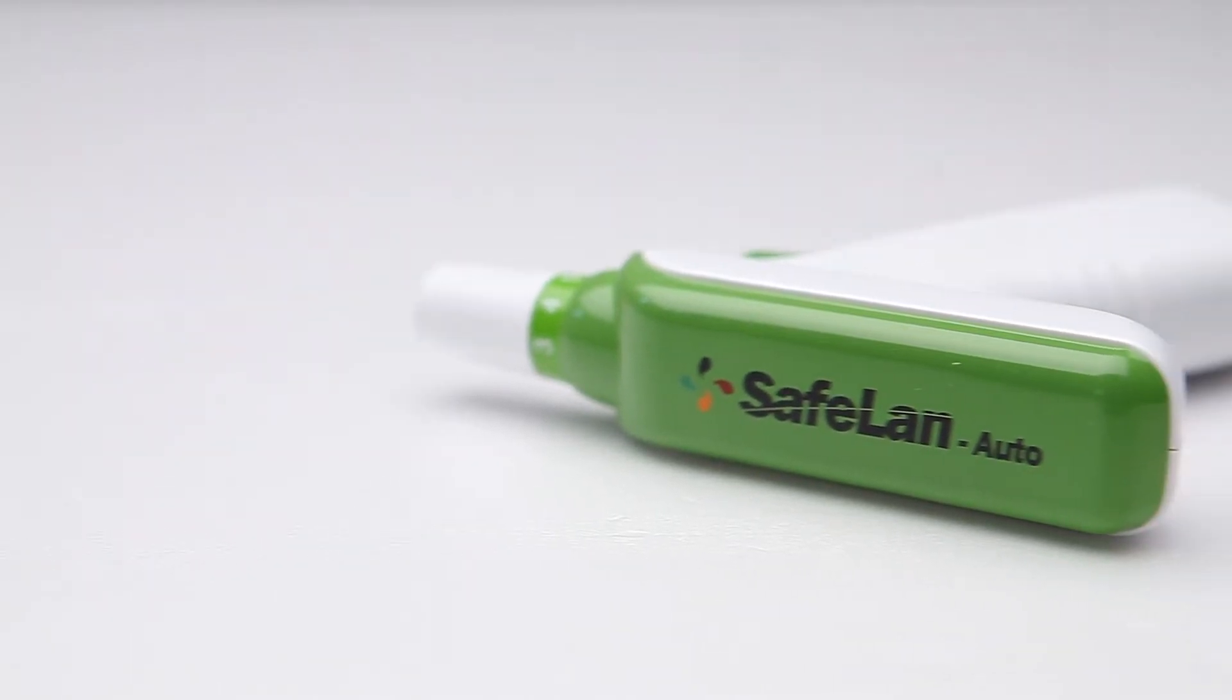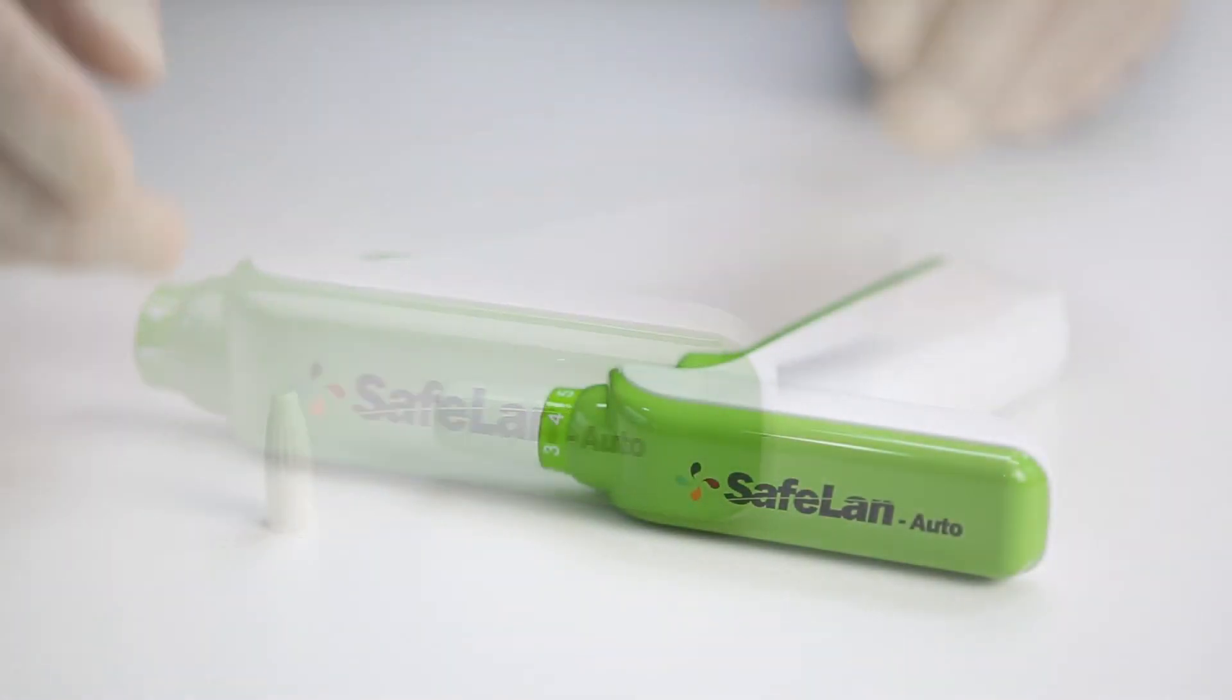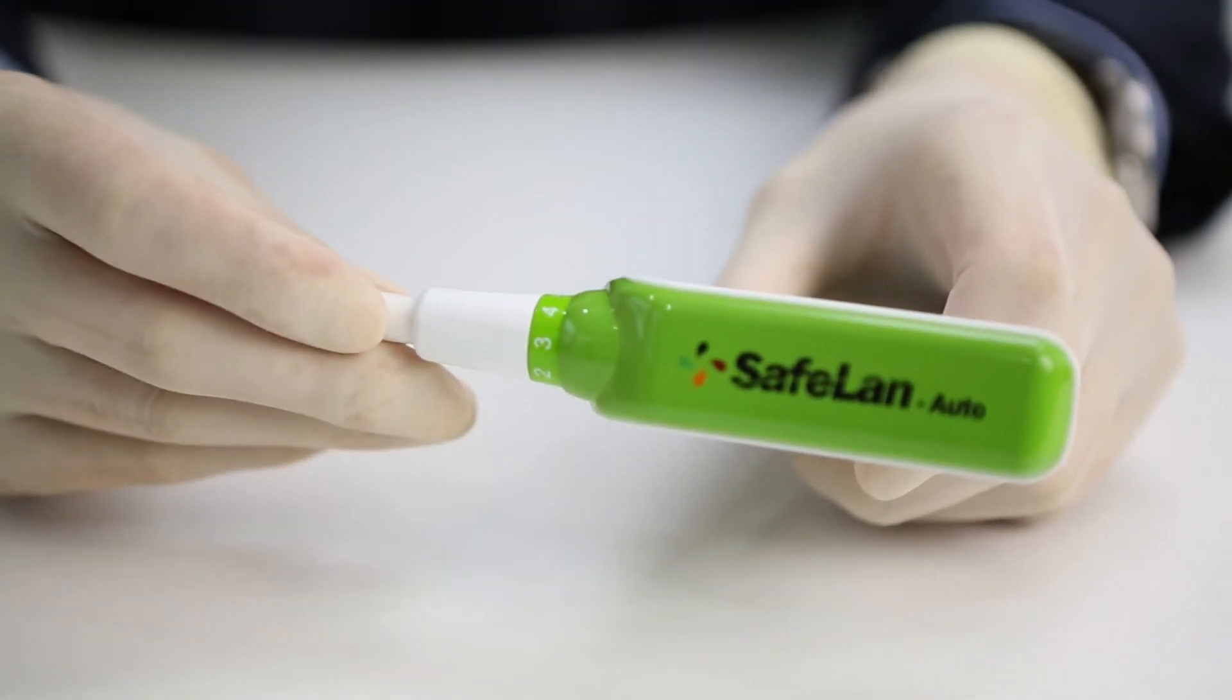Safeland Auto, which uses Safeland 26G, is a product used for bloodletting, similar to bloodletting moxibustion treatment.